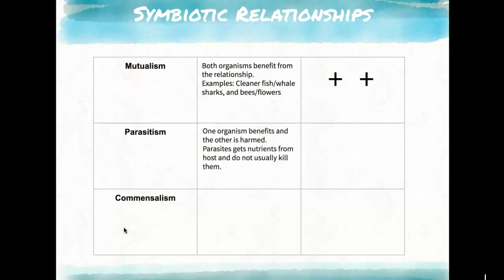Parasitism is when one organism benefits and the other is harmed. Usually the parasite steals nutrients and doesn't kill the host, but sometimes the host can die from the negative impact. Mosquitoes and humans are an example — mosquitoes steal blood, and while they don't always kill humans, they can carry diseases like West Nile that could be fatal.